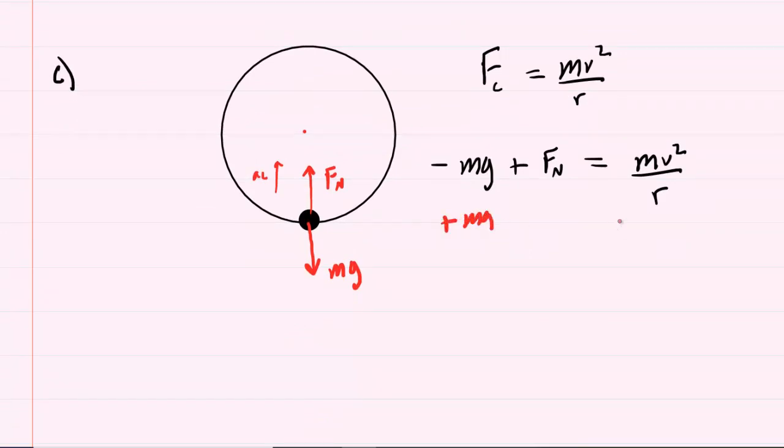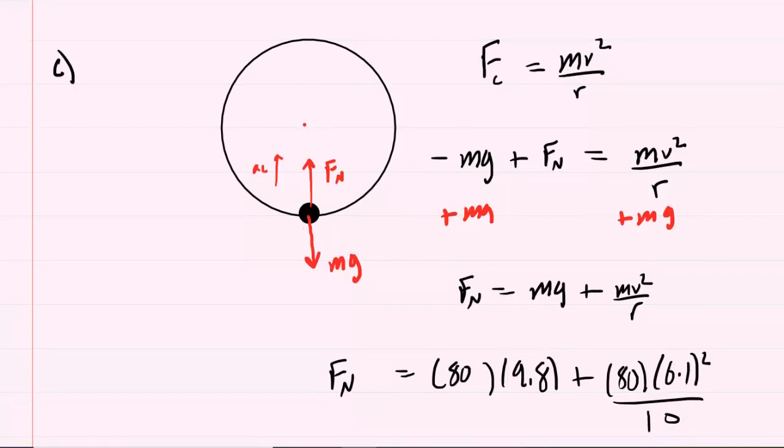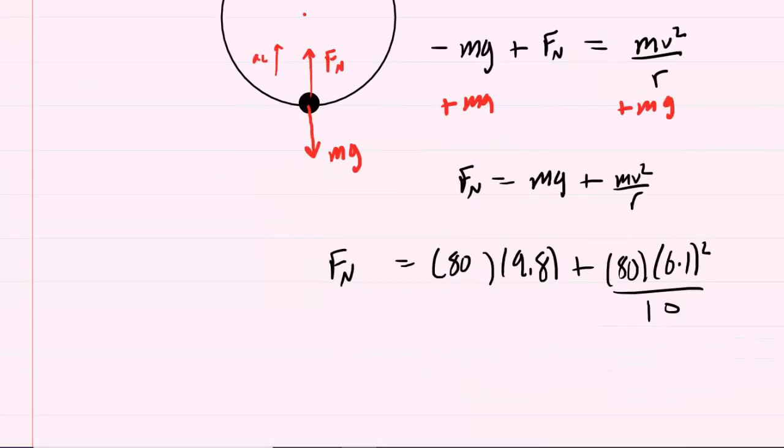We'll add mg to both sides, and then we have Fn is equal to mg plus mv squared over r. We'll fill in all the same values. This time we're going to get a different answer because of the presence of the plus sign. When you work this out, you should get about 1100 newtons for the normal force.